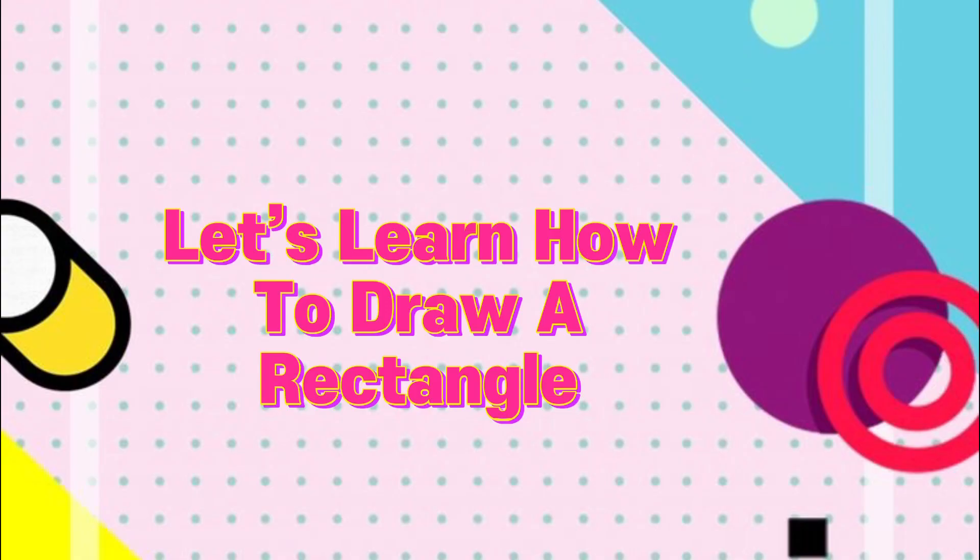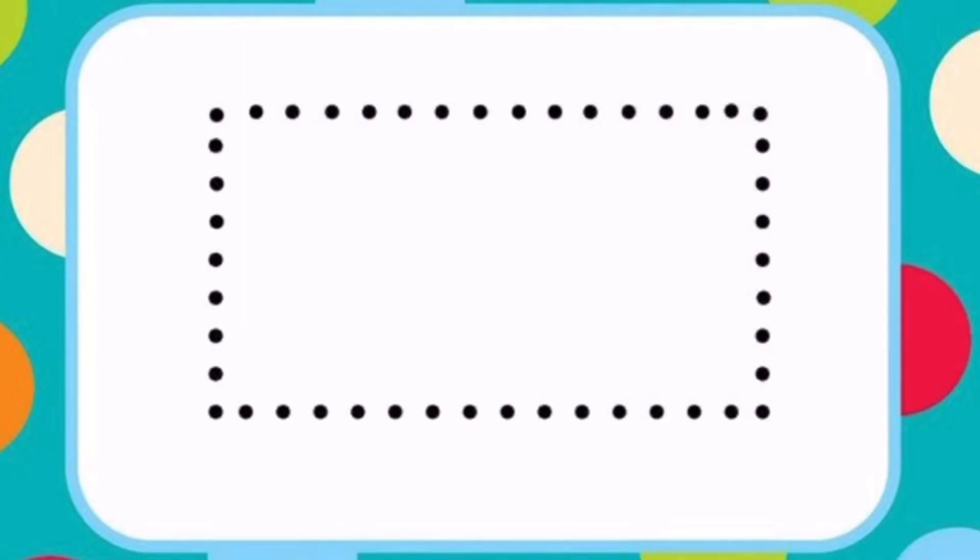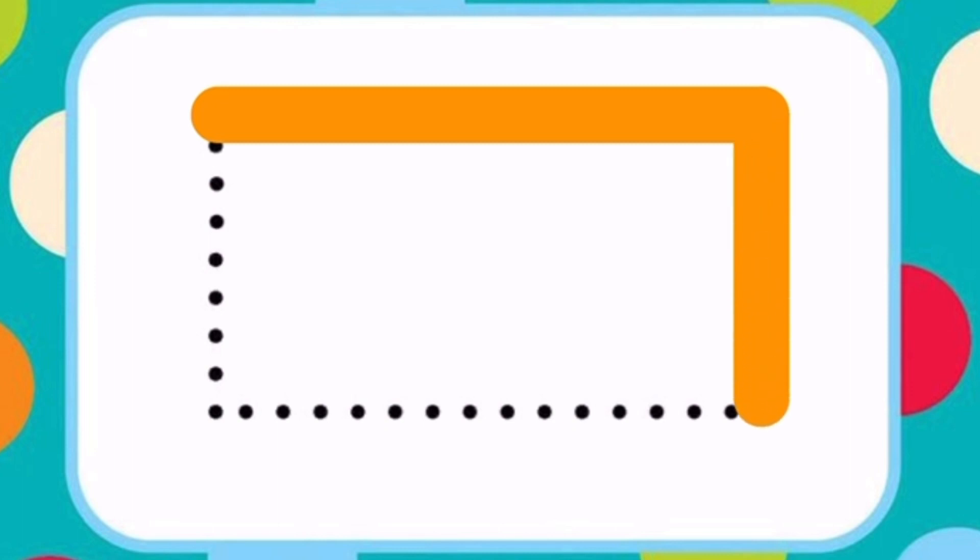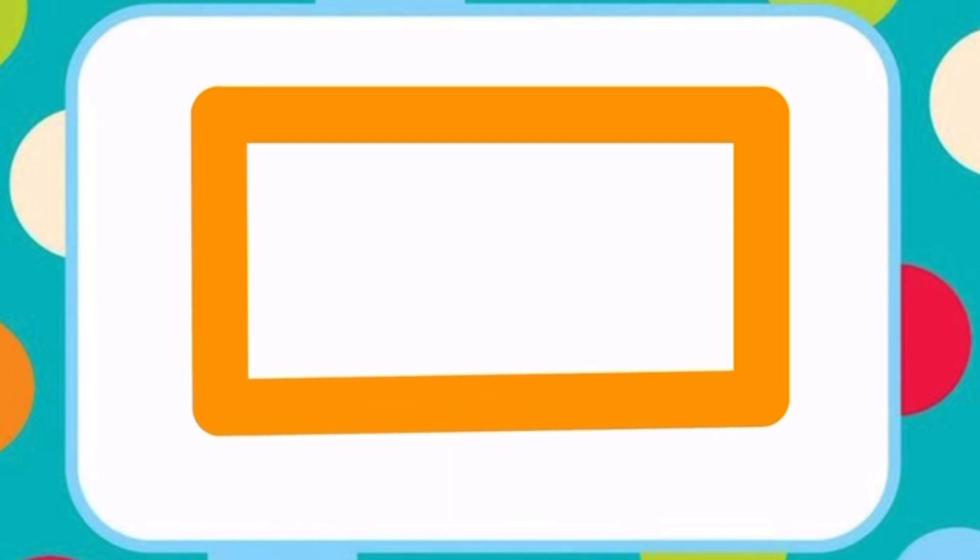Let's learn how to draw a rectangle. First draw a sleeping line starting from a point. Now draw a standing line from the end point of the sleeping line. Then draw another sleeping line, and then draw a standing line joining the sleeping lines. This is how you draw a rectangle.